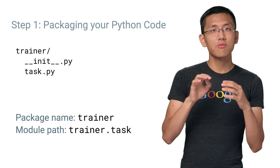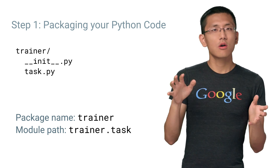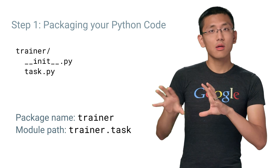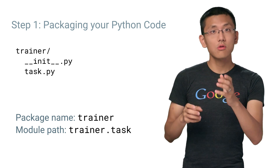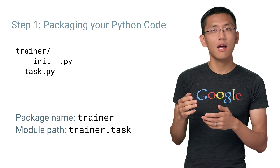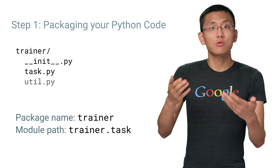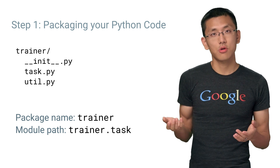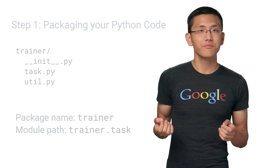If you wanted to break out the code into more components, you would include those in this folder as well. For example, you might have a util.py in the trainer folder. Once our code is packaged up, it's time to create a configuration file to specify what machines you want running your training.